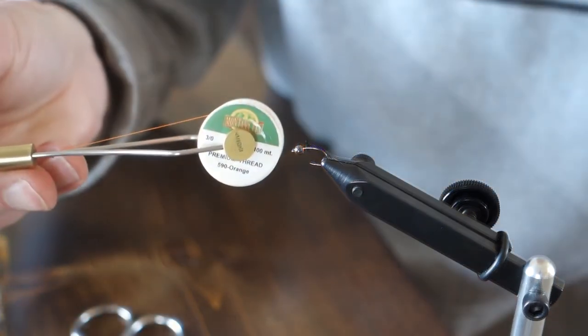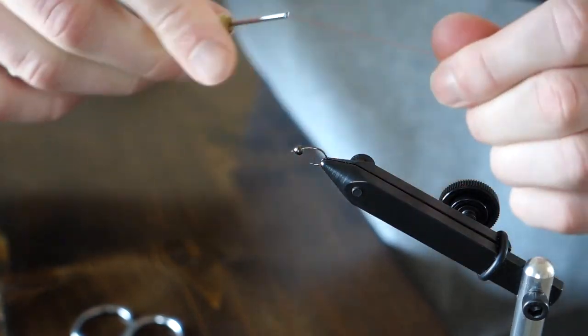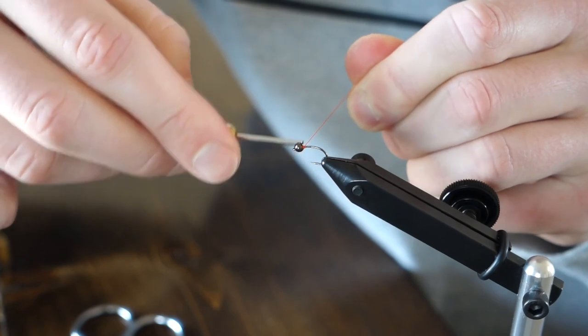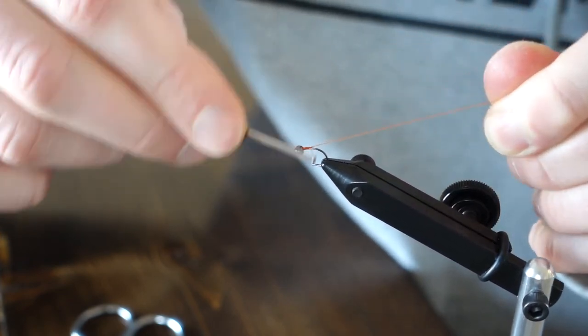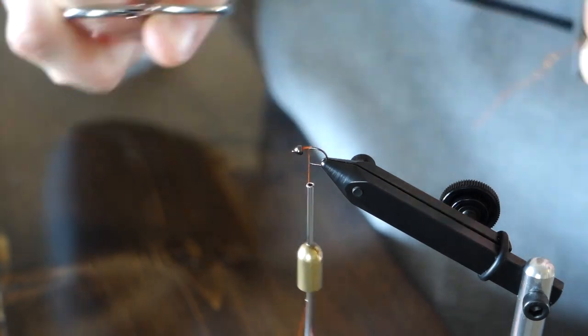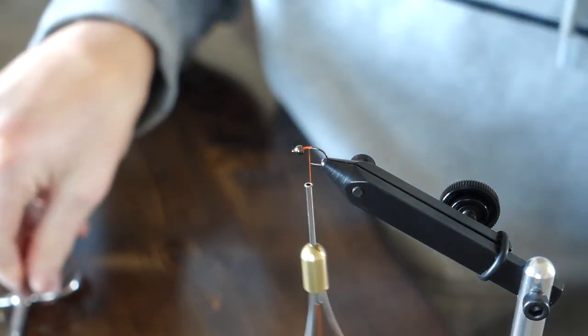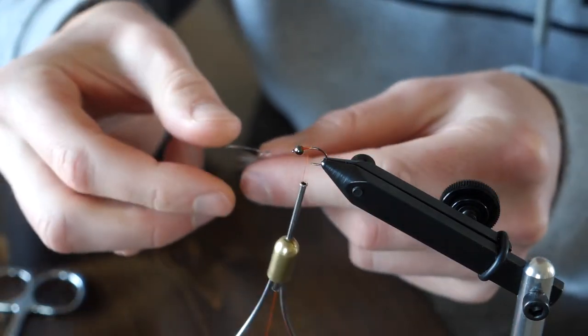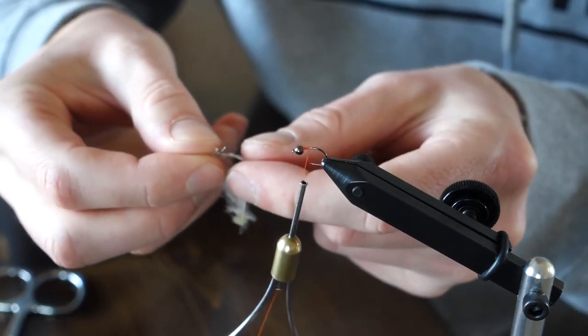We're tying this on a size 14 curve shank hook. Typically this would be used for scuds or caddis or emergers. We're using orange thread, 136 denier. We've got a 2.8mm tungsten bead on there. It's a heavy bead and it helps get this fly down in the water really quickly.